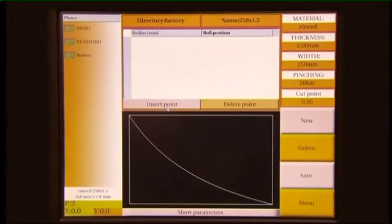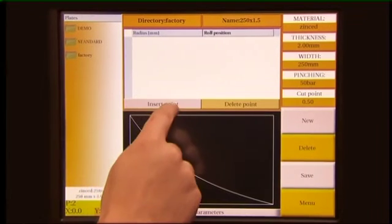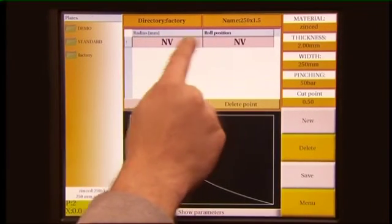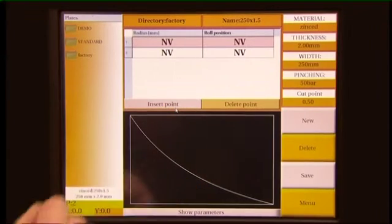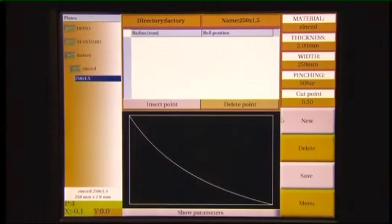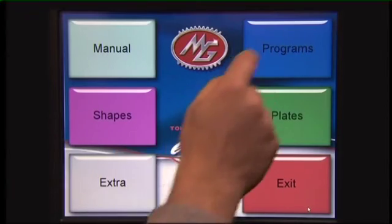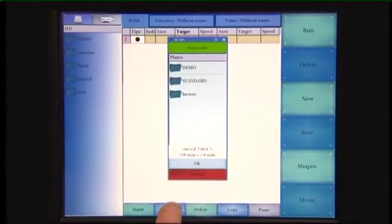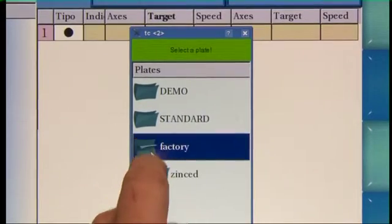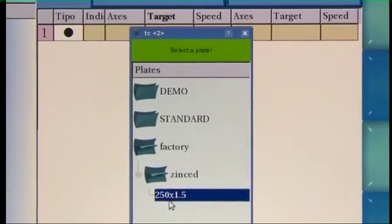Let's proceed now to the estimate of the plate elasticity, which takes place entering at least two test points, that is to say two positions of the bending roll and the corresponding obtained radiuses. The test itself is made manually, but the preparation steps can be automatically generated in the program's window.